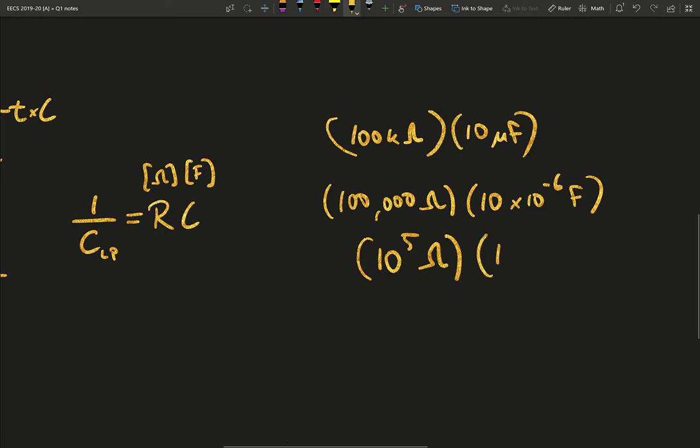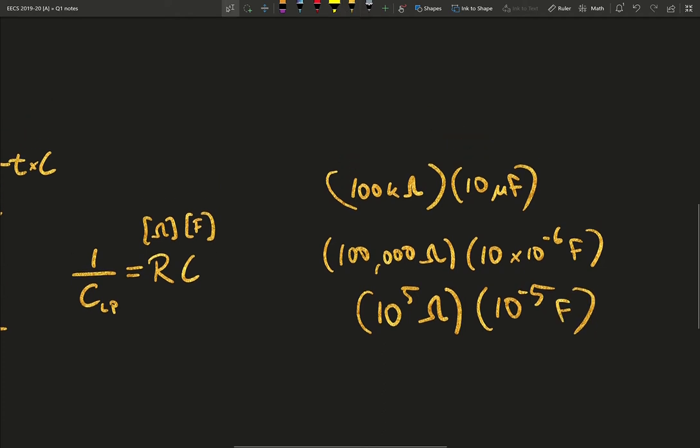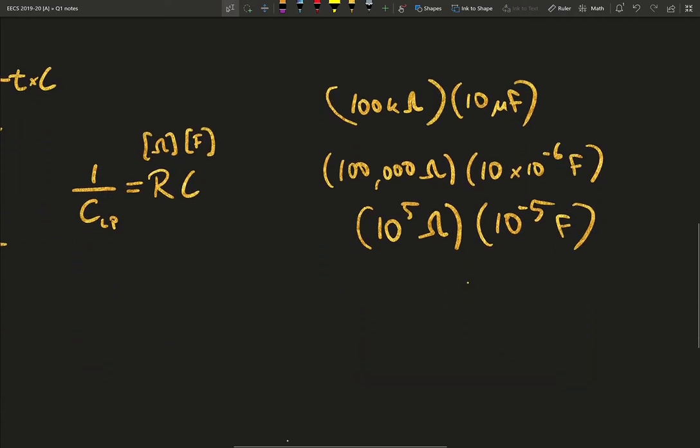So we have 10 times 10 to the minus 6 farads here, and so we have, this is 10 to the 5 ohms, and then the 10 times 10 to the minus 6 becomes 10 to the minus 5 farads. Do you see something cancelling out nicely? And so we get this is the same as 1 ohm times farad. Now what you're going to find, and I have a video that explains this, is that an ohm times a farad is a second.